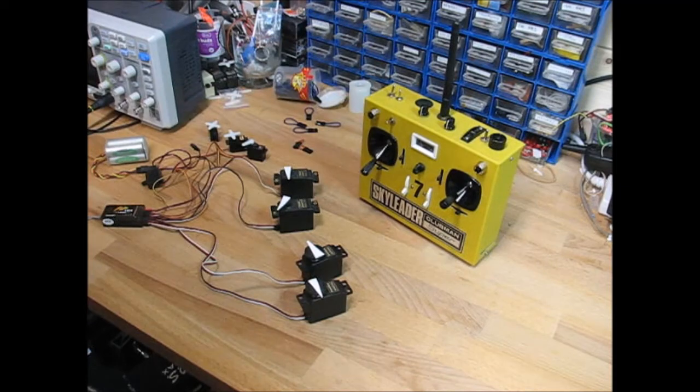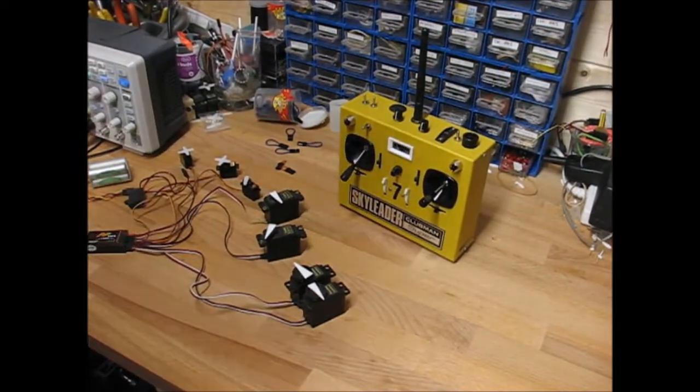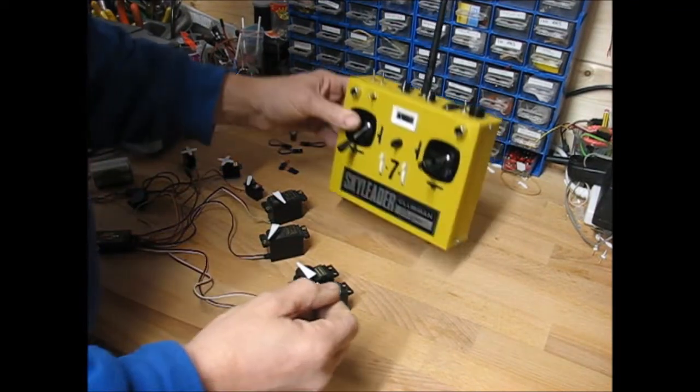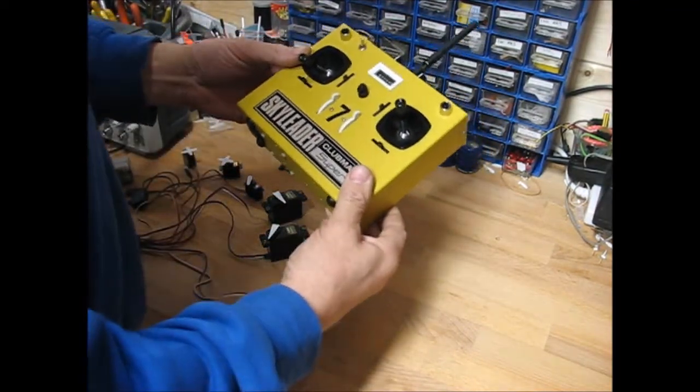So there's one of those inside the Clubman. So once the conversion's complete, the first job is to calibrate the set. And this is slightly different to the original 7-channel encoder.